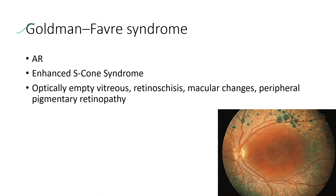Next is Goldman-Favre syndrome, also known as enhanced S-cone syndrome. It is an autosomal recessive condition. The ocular features include optically empty vitreous, retinoschisis, macular changes, and peripheral pigmentary retinopathy, as shown in this fundus image.